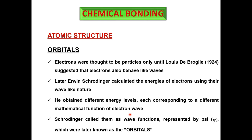Schrödinger called these energy levels wave functions, represented as psi (ψ). Each energy level corresponded to a different mathematical description of that electron wave. These energy levels were later known as orbitals, so now you know that orbitals do not have a physical existence — they are simply energy levels of an electron wave in a particular atom.